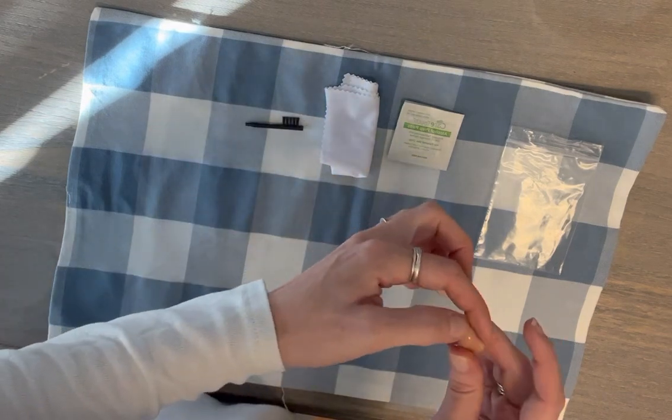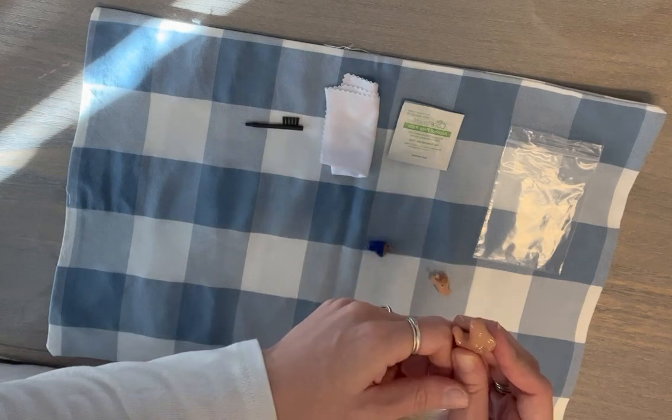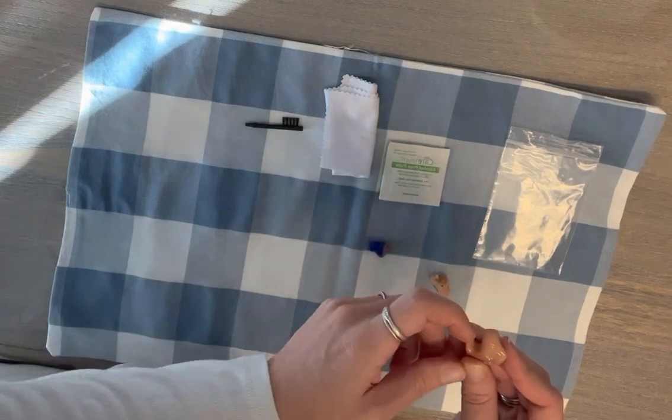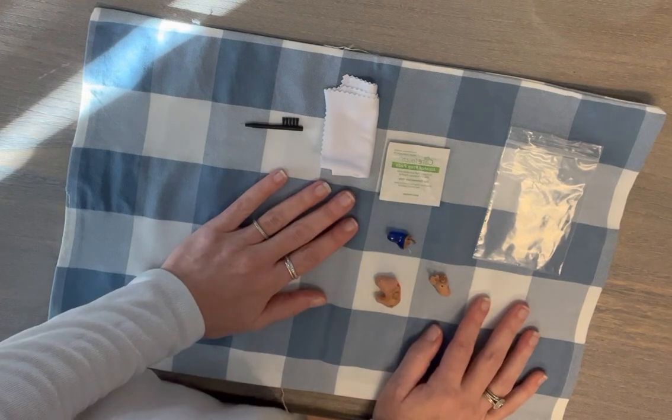If you have any sticky cerumen or wax that's on the canal portion of the custom device, you can use an alcohol prep pad to wipe this off as well. And that is how you clean a custom battery operated hearing aid.